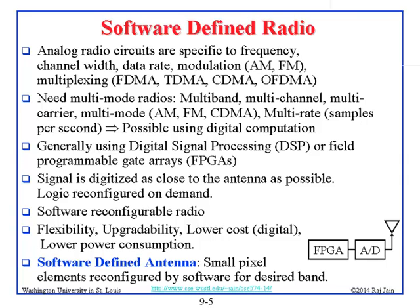If you have a fast enough computer you can compute everything. We do have fast enough computers — digital signal processors, DSPs, and FPGAs. What they do is take the incoming signal and convert it from analog to digital using an A-to-D converter. Once it becomes digital, everything else is software. You can write programs to handle whatever you need. This is called software-defined radio, or SDR. In software you can specify the rate, the modulation, and all the parameters — giving you flexibility, upgradability, lower cost, and lower power consumption.